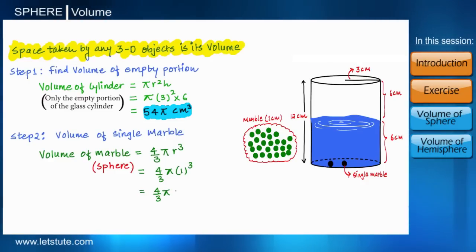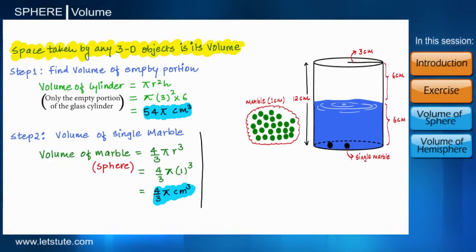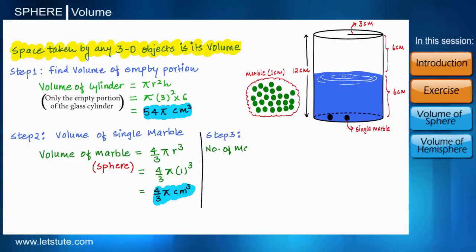First of all let's calculate the volume, so its volume will be 4/3 π centimeter cubed. Now let's go to the third step. Here we will divide volume of empty portion of the glass by volume of a marble, so after calculation it will give us 40.5.